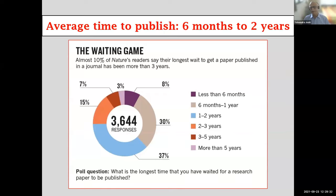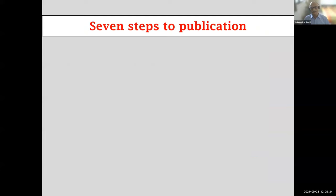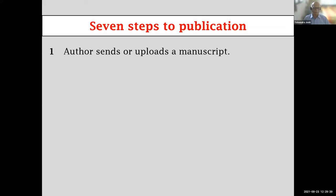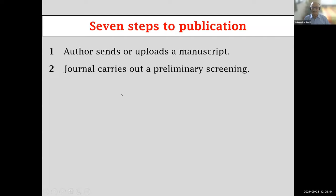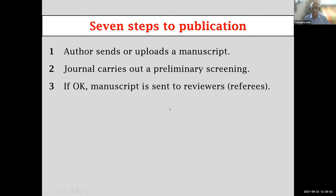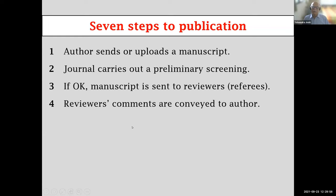Getting a paper published is a long, drawn-out process — it's a marathon, not a sprint. It takes anywhere between six months and two years, passing through seven steps beginning with uploading your manuscript, then a preliminary qualifying round to decide if it's worth sending to reviewers, and then the review itself.